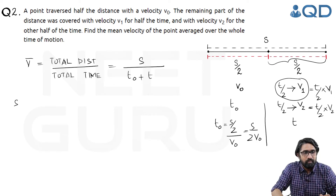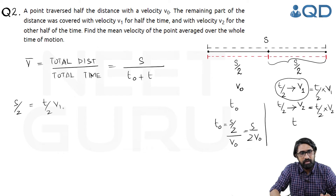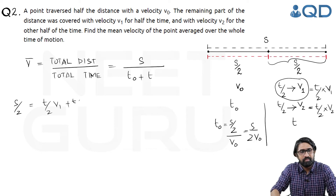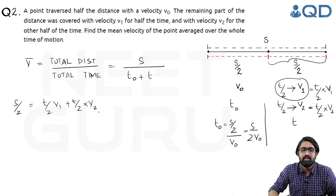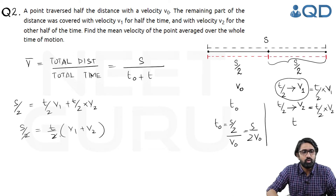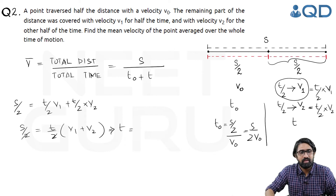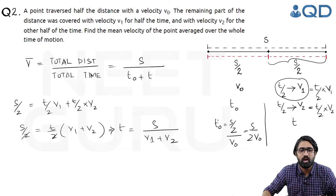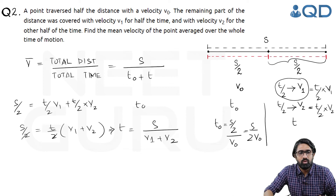So s/2 equals (t/2)·v1 + (t/2)·v2, which gives s/2 = (t/2)(v1 + v2). Cancelling the 2 from both sides gives t = s/(v1 + v2). We already have t0 = s/(2v0), and now we have t = s/(v1 + v2).